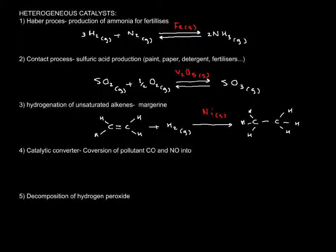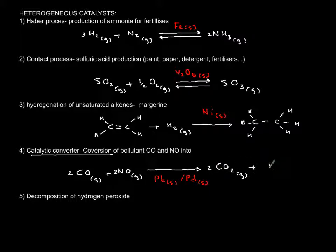Another important example is catalytic converters in cars to get rid of two poisonous gases: carbon monoxide and nitrogen monoxide. We usually use platinum or palladium, and it will convert them to the global warming gas CO2, but at least it's not poisonous, and harmless nitrogen, which makes up 78% of the air anyway.